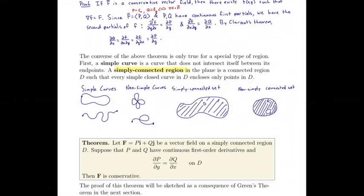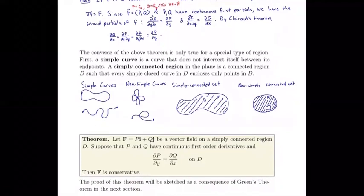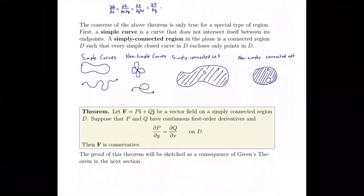A simply connected region is one in which every closed curve inside the region encloses only points in that region. In the simply connected set shown, any closed curve drawn within it contains only points inside the set. By contrast, a non-simply connected set — even if connected — fails this criterion: a closed curve in red encloses a hole that is not part of the set, so it does not satisfy the definition.